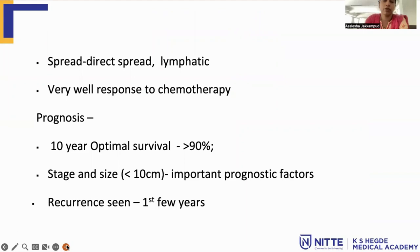The spread is usually by direct route or through the lymphatics with lymph node deposits. They have a very good response to chemotherapy and prognosis is very good — 10-year survival is more than 90%. Stage and size of the tumor are important prognostic factors. Less than 10 cm size has good prognosis. Recurrences are rare but if they occur, it is usually seen in the first few years.